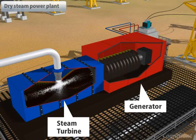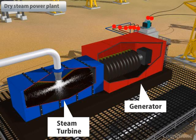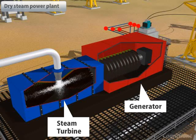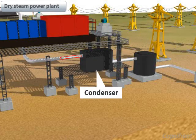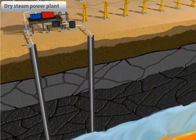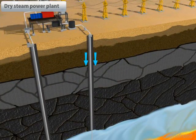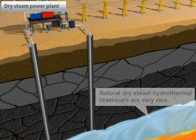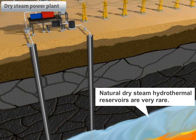The flow of steam causes the turbine to rotate, and because of this the generator produces electric energy. After rotating the turbine, steam goes through the condenser where it is converted into water, called condensate, and it is injected back into the earth through the injection well. Natural dry steam hydrothermal reservoirs are very rare.